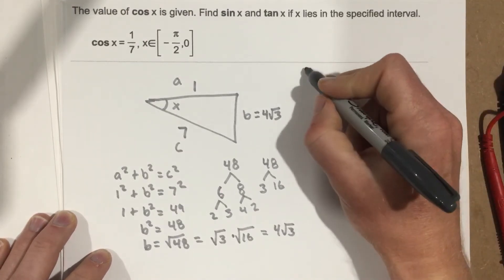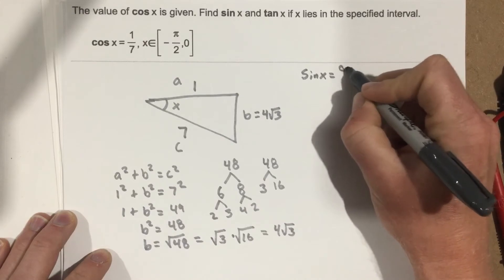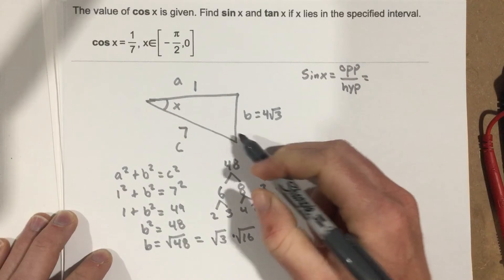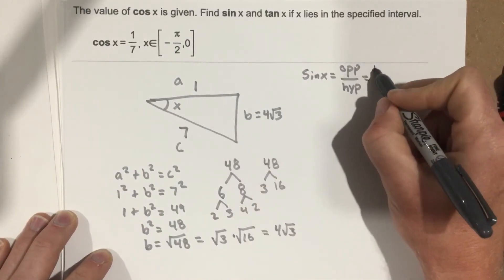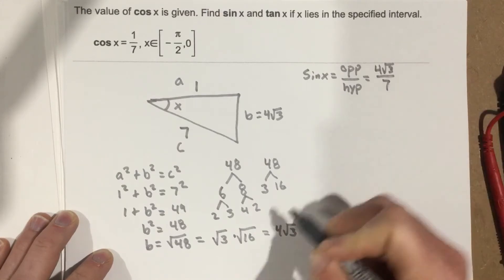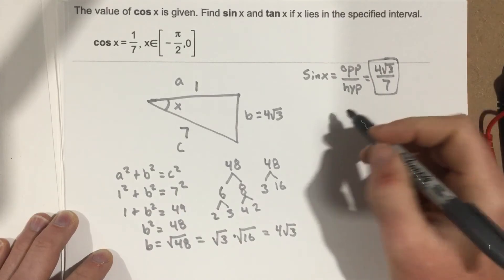So then I can say that sine x I know is the opposite over hypotenuse, opposite side being B, which is 4 root 3, over hypotenuse, which is 7. So that's one solution right there. It doesn't reduce anymore because of 4 and 7.